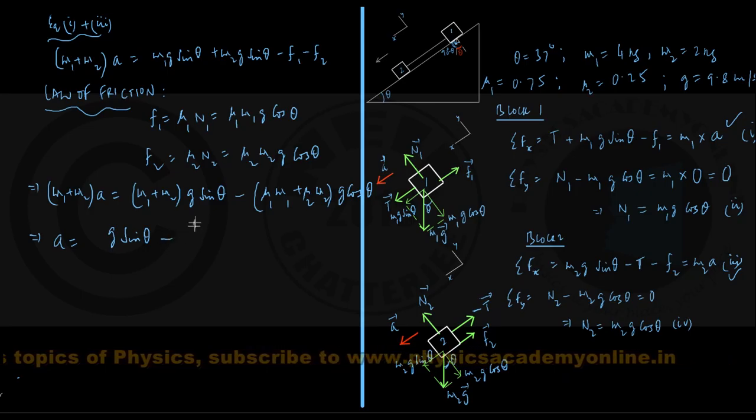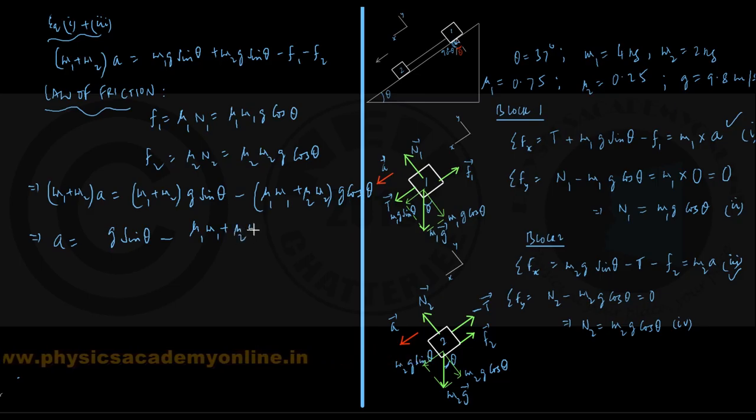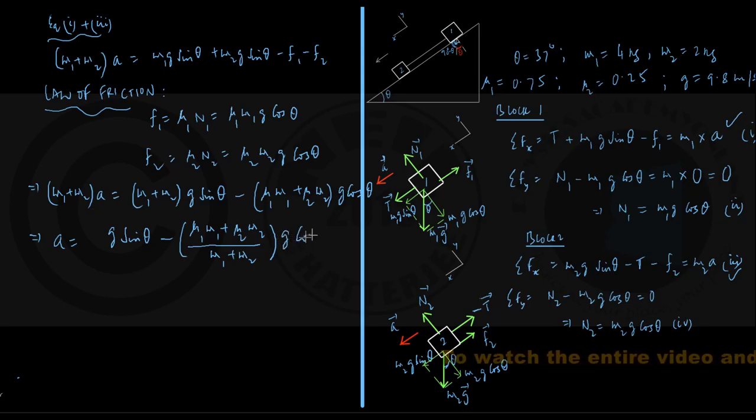mu1 m1 plus mu2 m2 divided by m1 plus m2. Let me put this inside bracket into g cos theta.